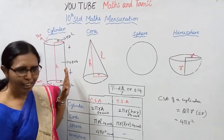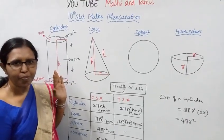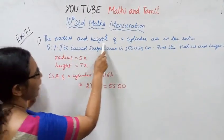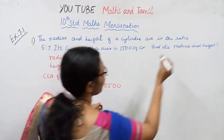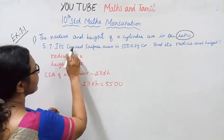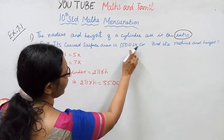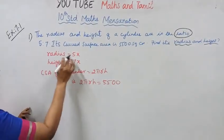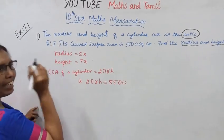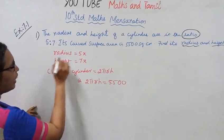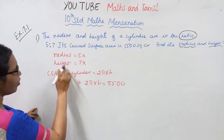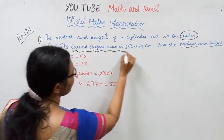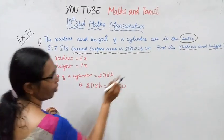Okay students, we are going to do one sum now. The problem: the radius and height of a cylinder are in the ratio 5:7. Its curved surface area is 5500 square centimeters. Find its radius and height. Let radius equal 5x and height equal 7x.